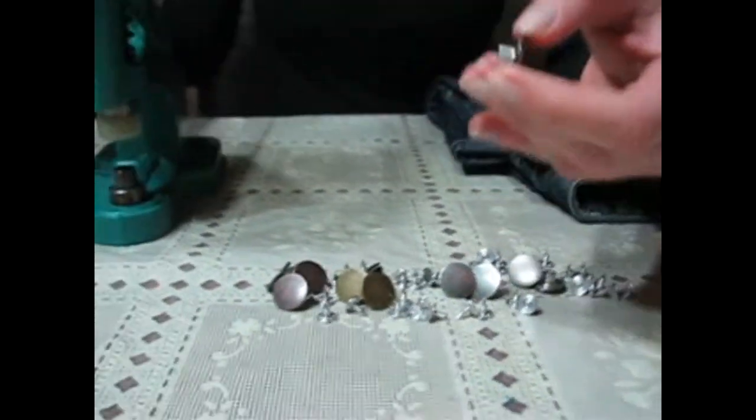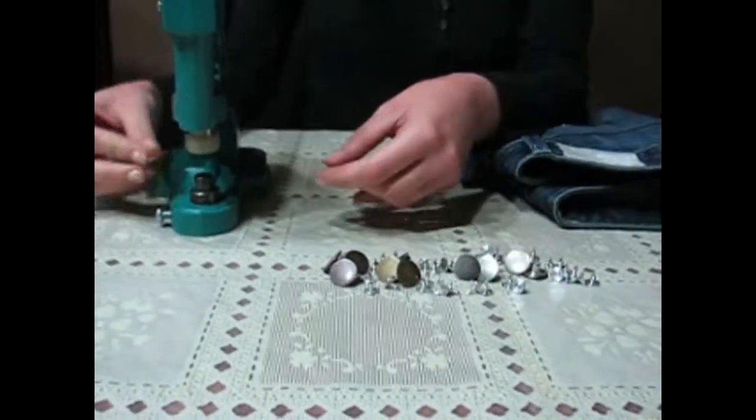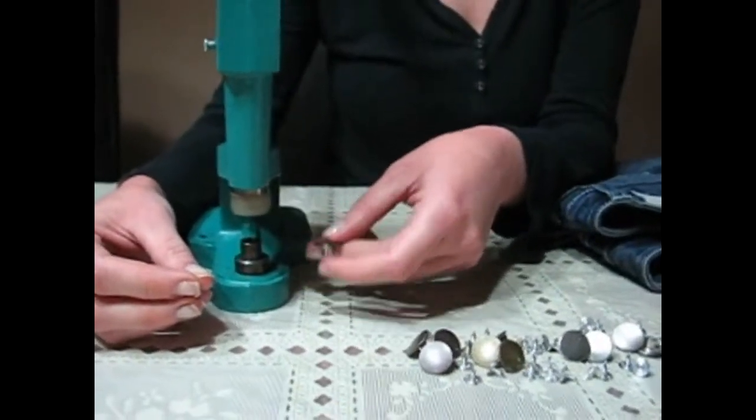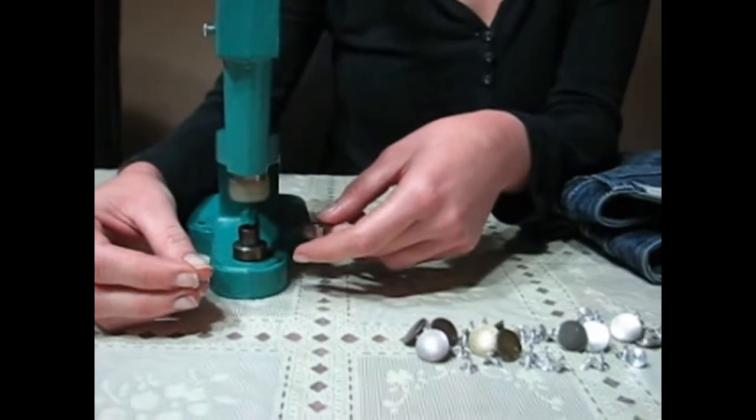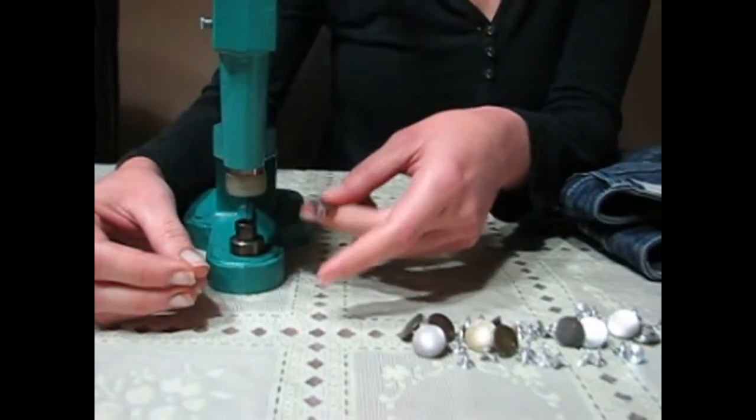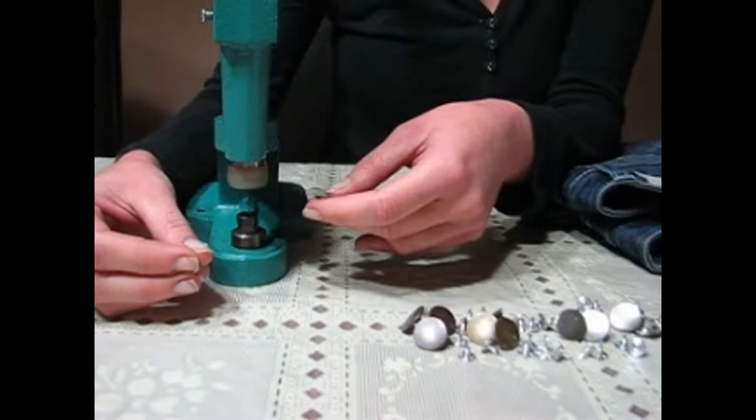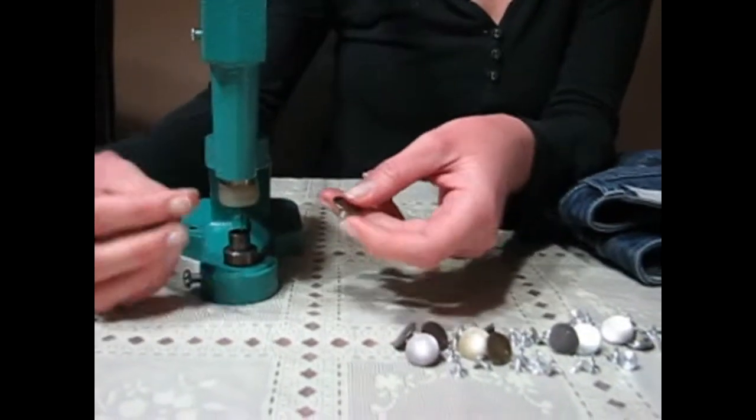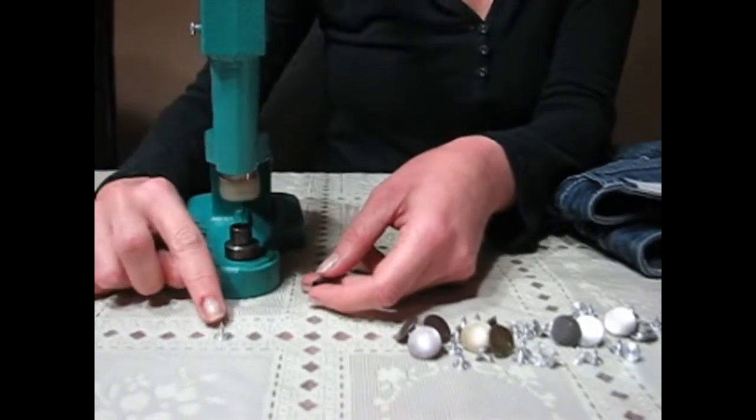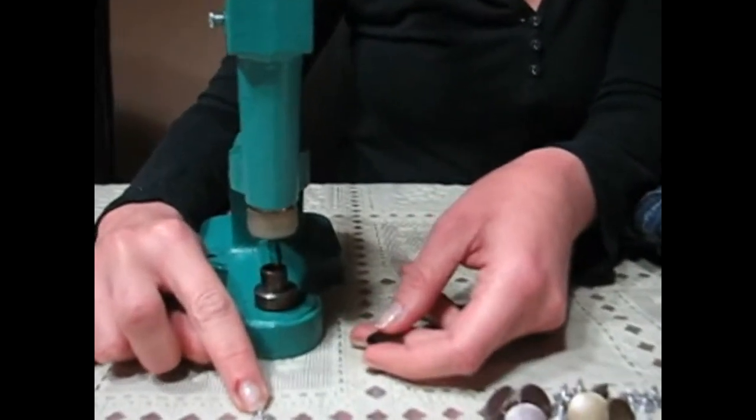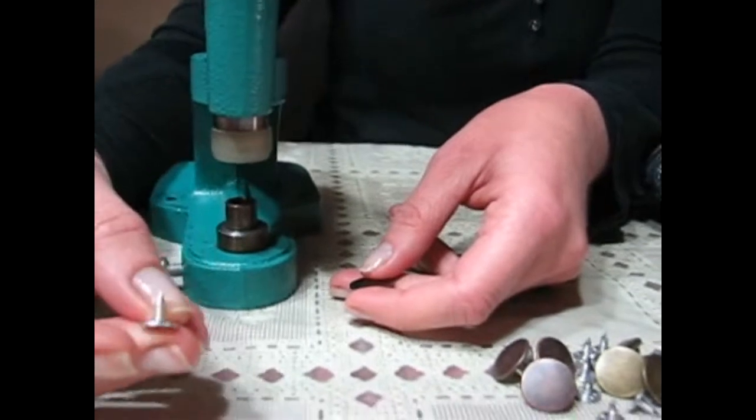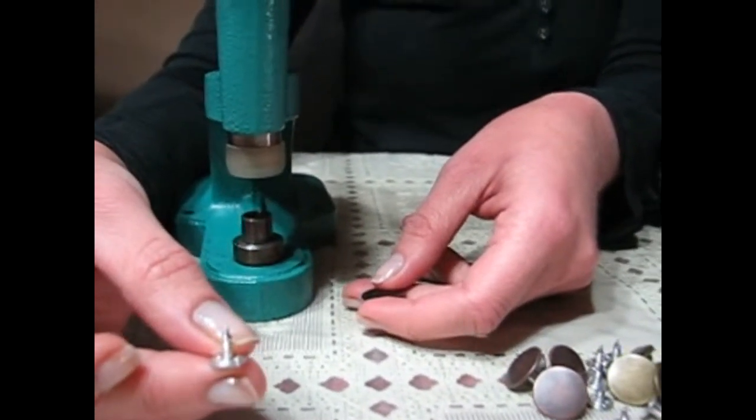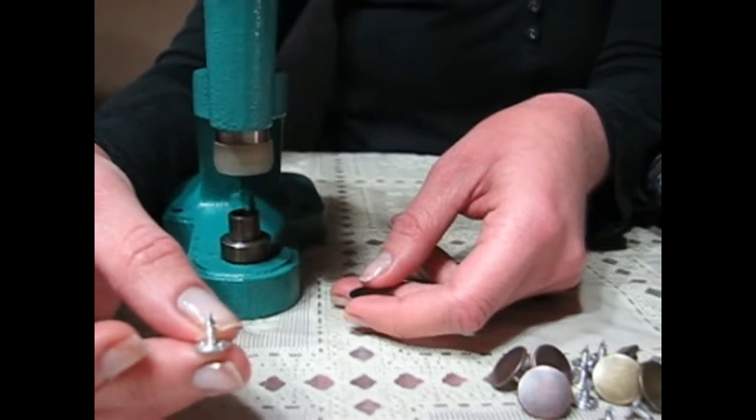I have in my machine the GeneTac rivet die. The exciting part about this die is that it is self-piercing, so there is no need to make your hole prior to setting these rivets. I'm just going to take my tack and as you can see there are little grooves in the tack. That gives it extra durability and makes it very strong.